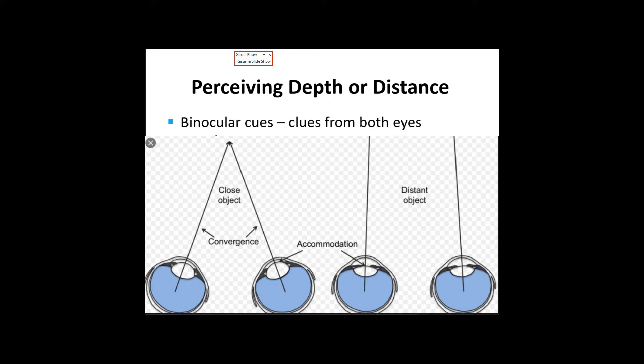Monocular cues are clues from a single eye, and binocular cues are clues from both eyes when they converge together.